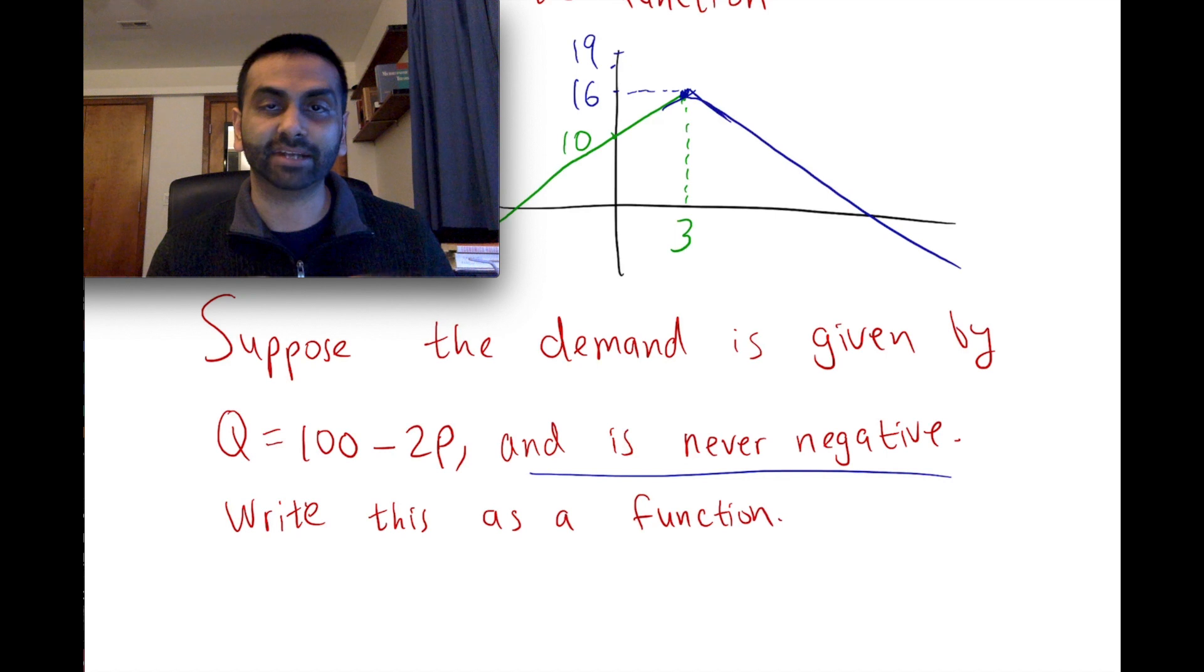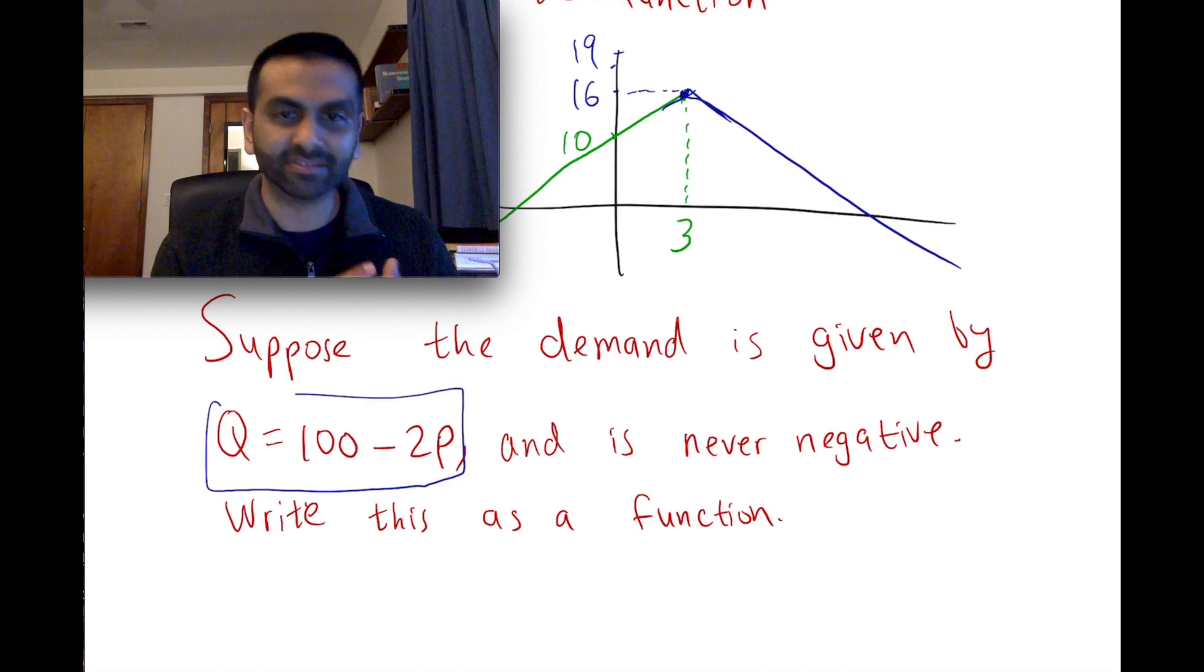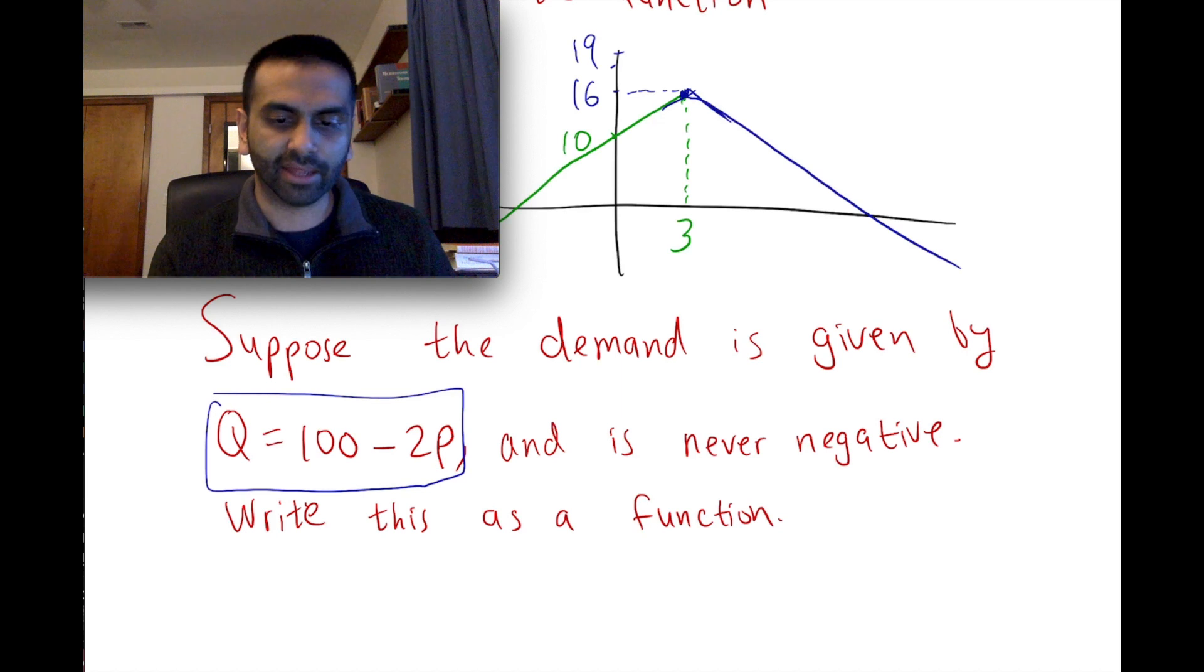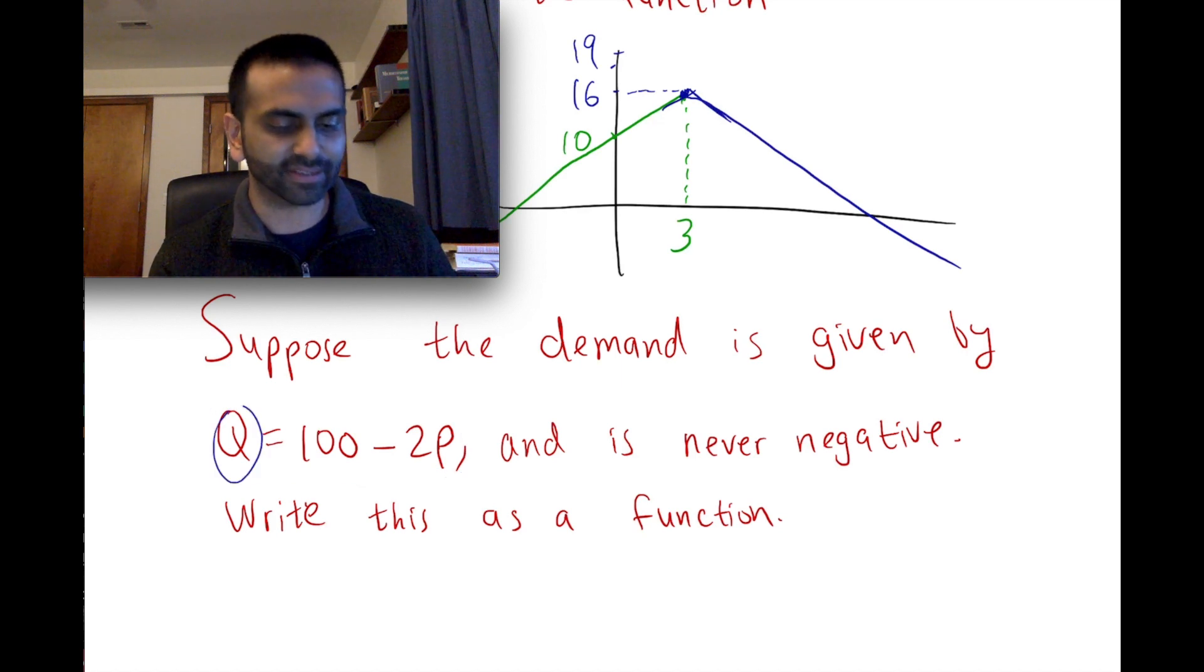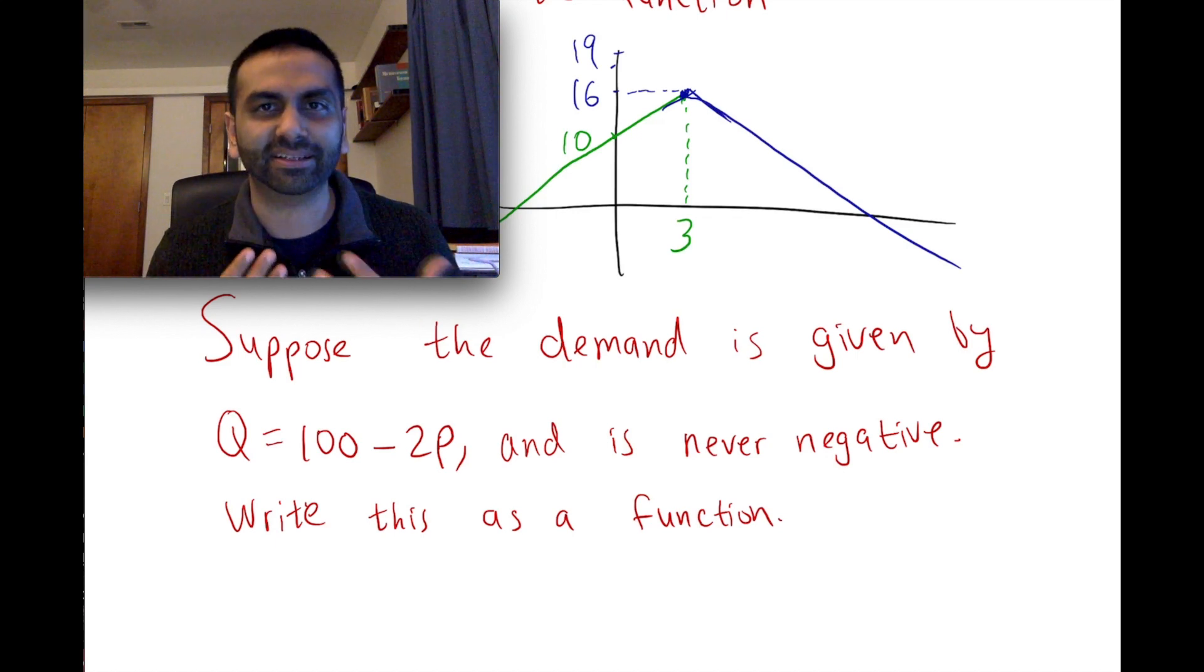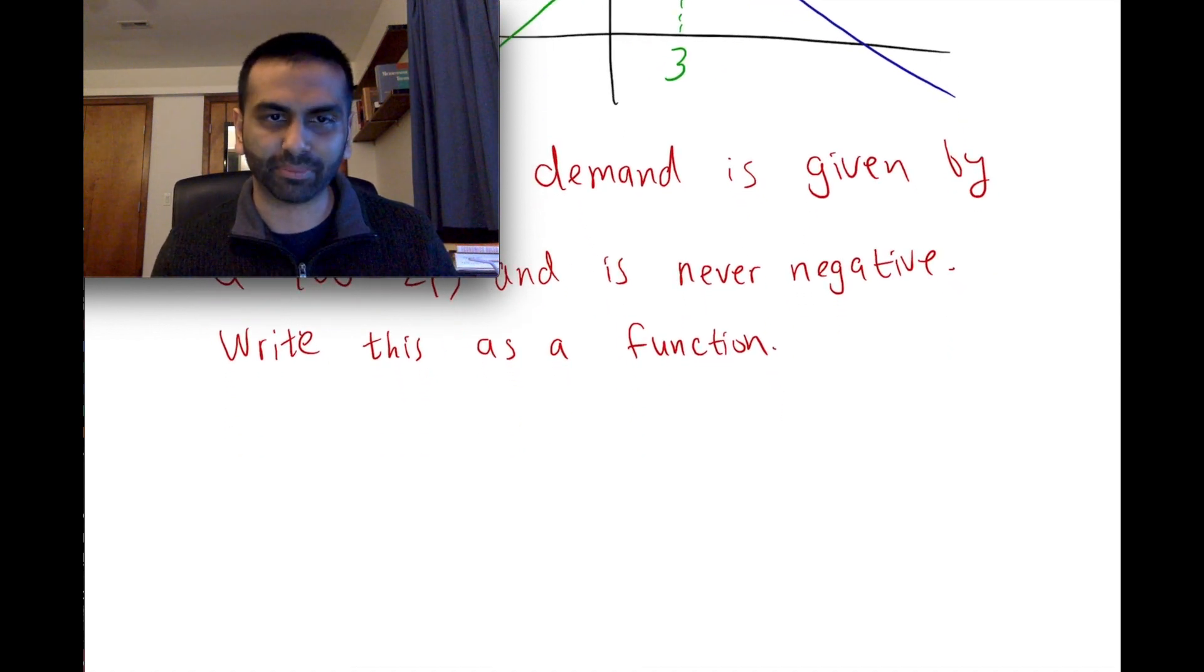But it's saying that the demand is never negative and write this as a function. So in a way, this is not a demand function because what if I said the price was $1,000, then this would be saying that the quantity demanded is like 100 minus 2 times 1,000, so 100 minus 2,000 is like negative $1,900. Well, we don't actually mean that this person is demanding negative $1,900. We'd probably say that they're demanding zero, because you can't demand a negative quantity.